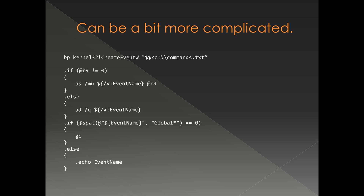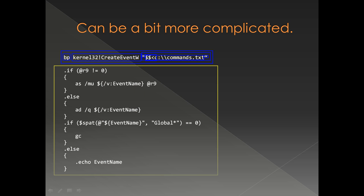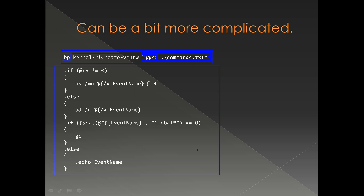Conditional breakpoints can be a little more complicated as well. Let's see this example — BP just like before, then the function to break, and in double quotes we have the command. But in this case instead of an if/else inline, we have a filename: c:\command.txt — this is the syntax for giving a file name.